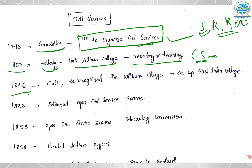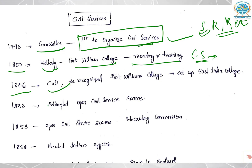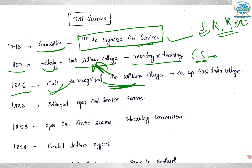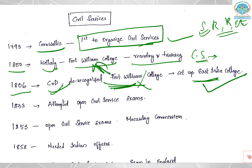Next, in 1806, the Court of Directors — remember we had two divisions: Court of Directors and Board of Control — they recognized Fort William College and set up East India College in its place.